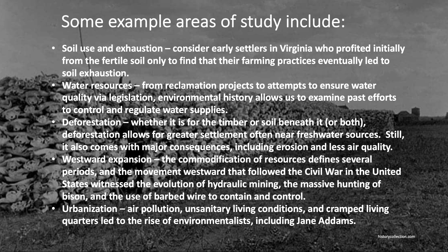Some example areas of study include soil use and exhaustion. Consider early settlers in Virginia who profited initially from the fertile soil, only to find that their farming practices eventually led to soil exhaustion. Water resources is another area — from reclamation projects to attempts to ensure water quality via legislation, environmental history allows us to examine past efforts to control and regulate water supplies.